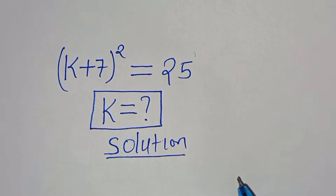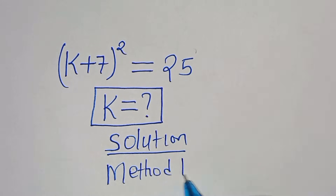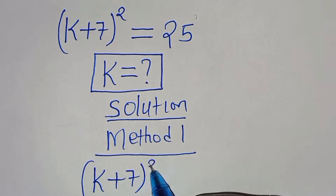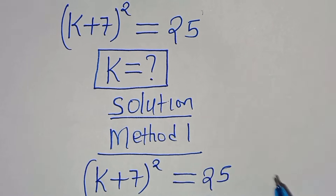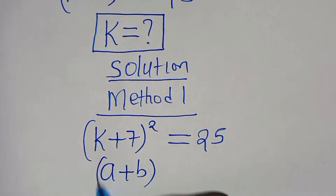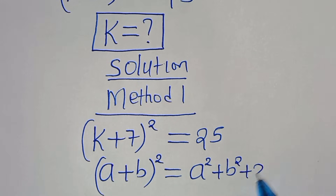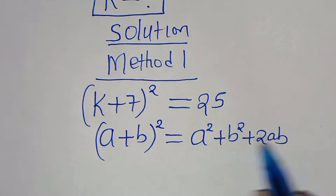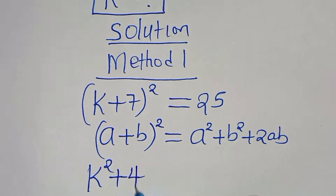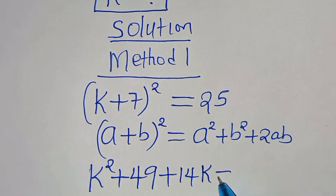We are going to solve this algebra problem by applying three methods. Let's start with Method 1. We have k plus 7 raised to the power of 2, this is equal to 25. Now k plus 7 to the power of 2 is in the form of (a+b)², which we can express as a² plus b² plus 2ab. Applying this algebraic identity, we have k² plus 7², which is equal to 49, then plus 14k, and this is equal to 25.